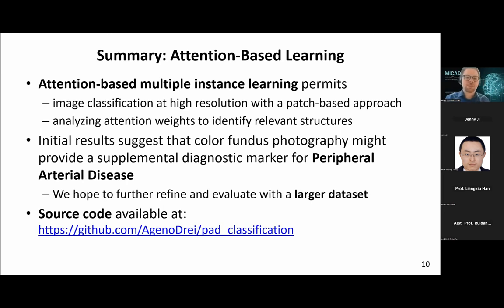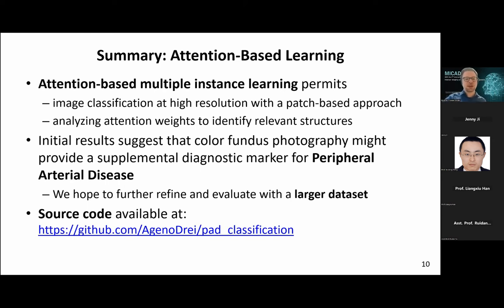That wraps up the first contribution: using attention-based multiple instance learning applied to detecting peripheral arterial disease based on fundus images of the eye. This allowed us to preserve high image resolution, and analyzing the attention weights allows us to identify relevant structures. We hope to further refine and evaluate this with a larger dataset, and we made the source code available on GitHub.